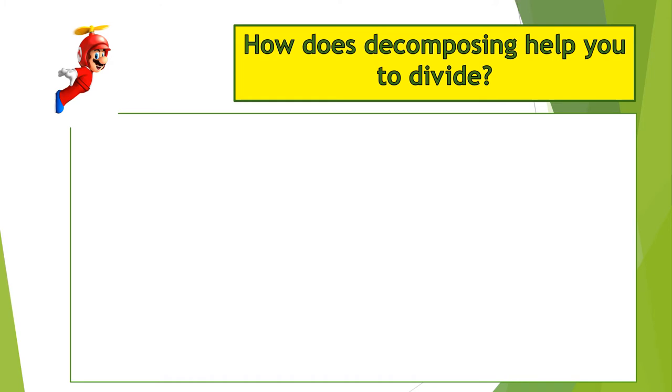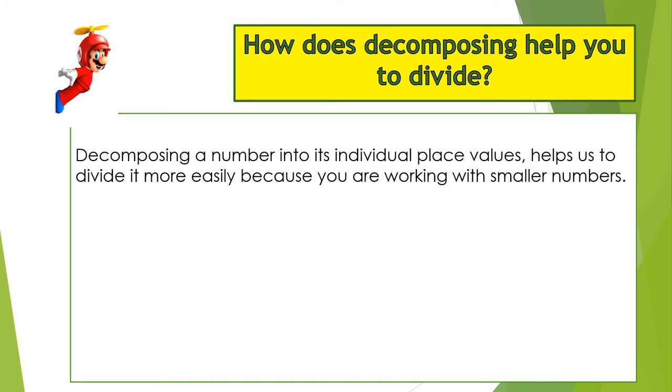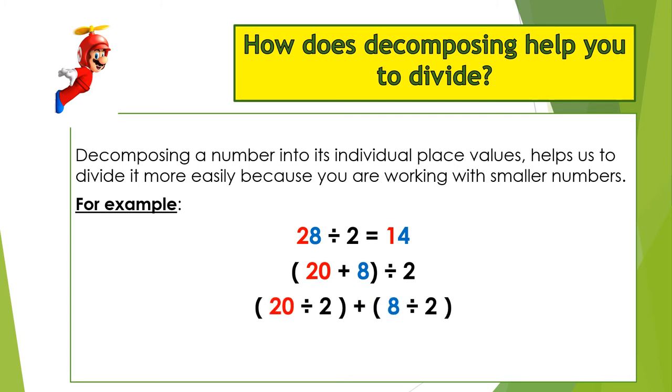How does decomposing help you to divide? Decomposing a number into its individual place values helps us to divide it more easily because you are working with smaller numbers. For example, 28 divided by 2 equals 14. First, you are going to decompose 28 to give 20 plus 8 divided by 2. Your tens will be divided by 2 and your units will be divided by 2. 20 divided by 2 plus 8 divided by 2.